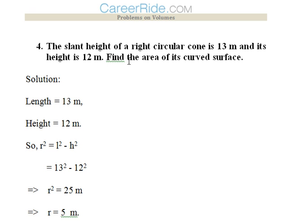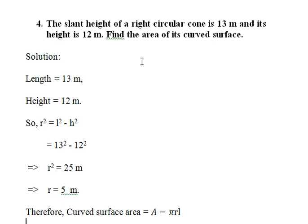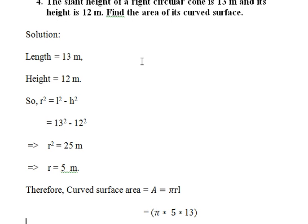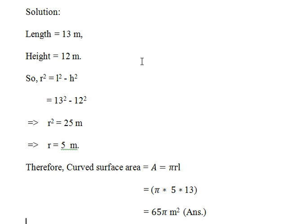He is asking us to calculate the area for its curved surface area. We need to remember the formulas. So the area of curved surface would be A is equal to pi into r into l. So pi into 5 into 13 would be 65.5 meter square. That would be the answer.